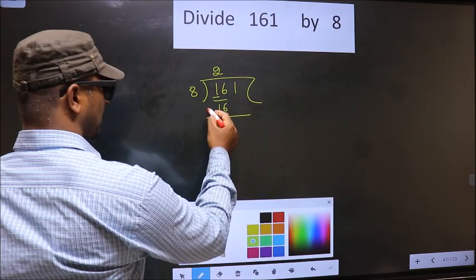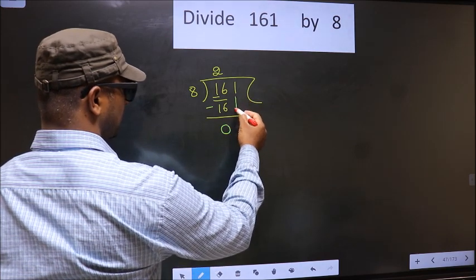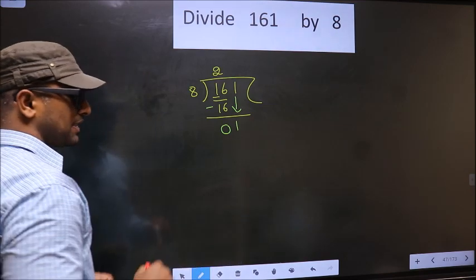Now you subtract. 16 minus 16 is 0. Now we bring down the beside number 1 down. This is where the mistake happens.